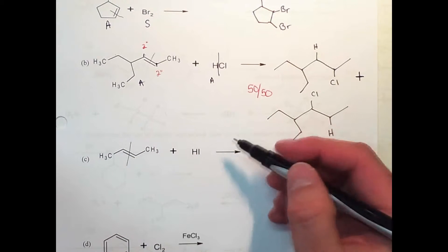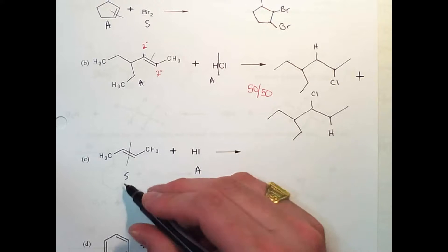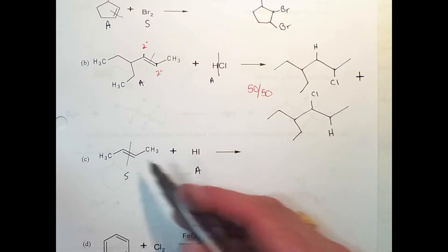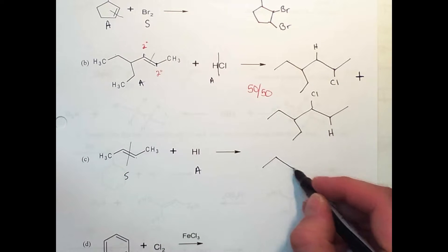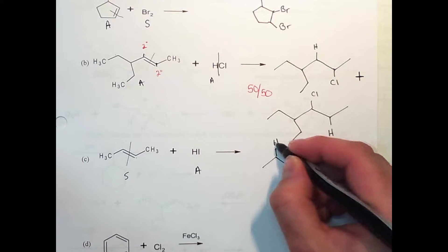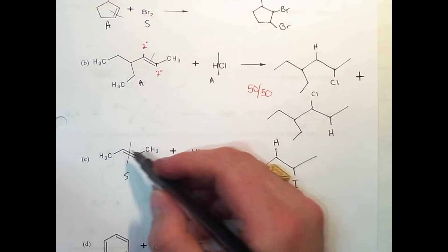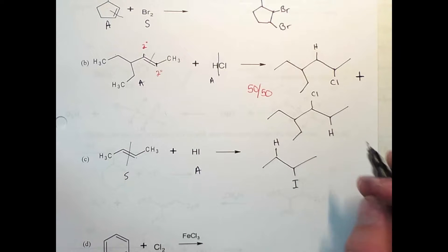Moving to part C: one reactant is symmetrical and the other is asymmetrical. With one being symmetrical we know we only have one product. So we draw one, two, three, four carbons and two, three, four — don't draw the double bond — hydrogen here, iodine there. Just open up the double bond and add the H and the I. Because one is symmetrical, we only have one product and that's it.